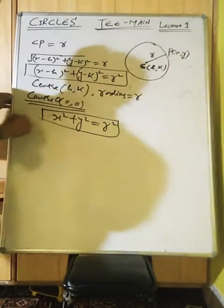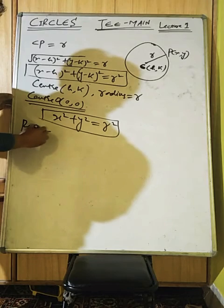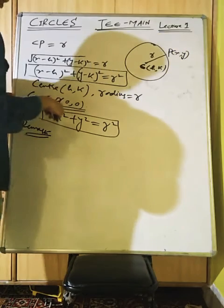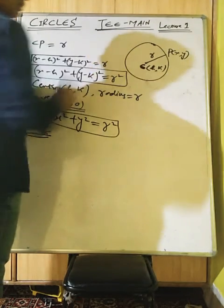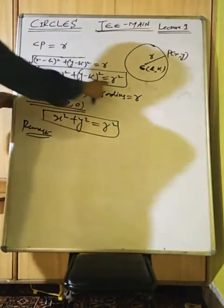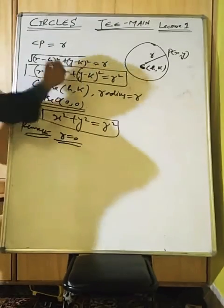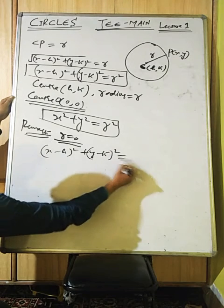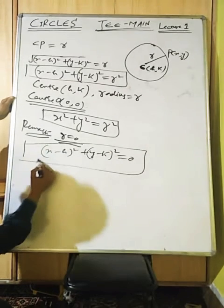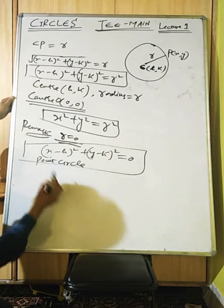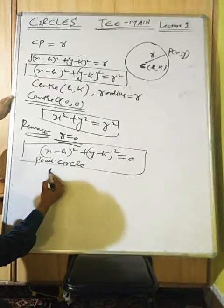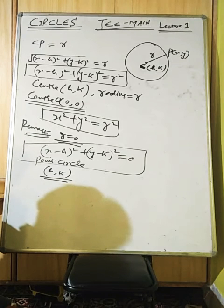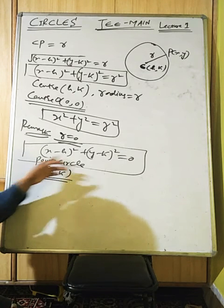If the radius is 0, then what happens to the circle? The circle collapses — it will reduce to a point (h,k). So if r = 0, then (x−h)² + (y−k)² = 0.